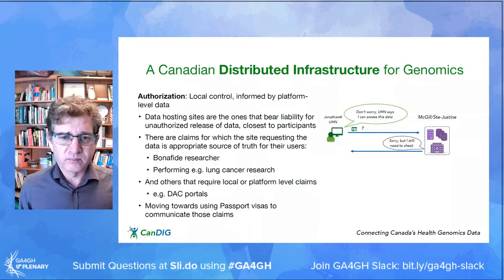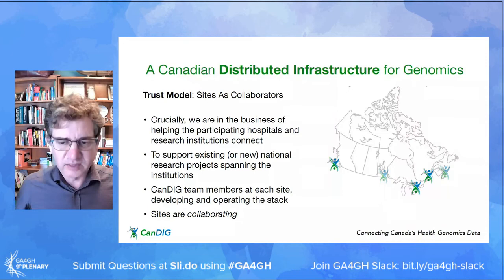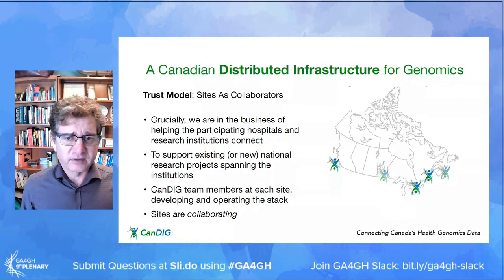We're moving to using GA4GH passport visas to communicate those authorization-related claims to the sites. Our trust model right now involves very strong trust between sites — we're in the business of helping participating hospitals and researchers connect to support their existing data sharing projects, and we have CanDIG team members at each site developing and operating the stack.